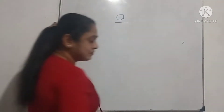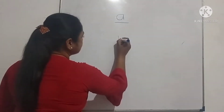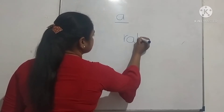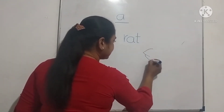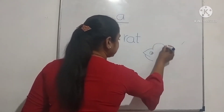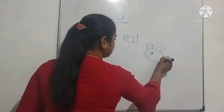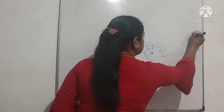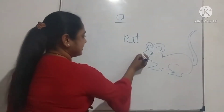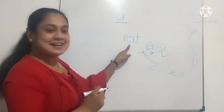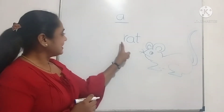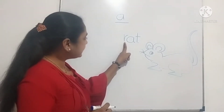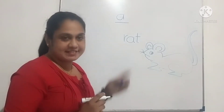Look at the word. R, A, T — Rat. Who is this? Rat. R, A, T — Rat. Right. R, A, T — Rat. R, A, T — Rat. Did you understand? R, A, T — Rat. Next one.